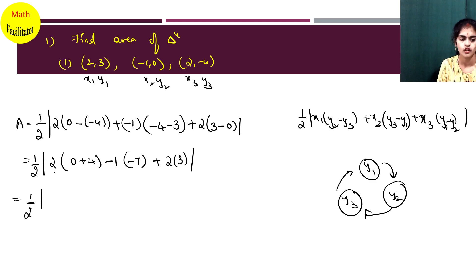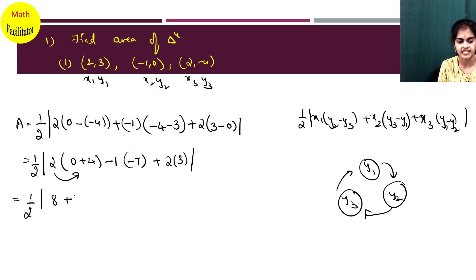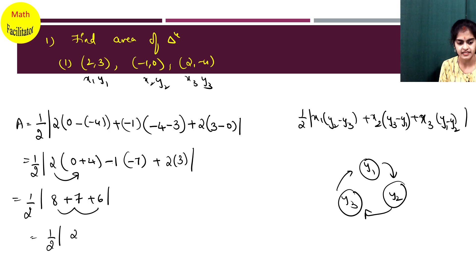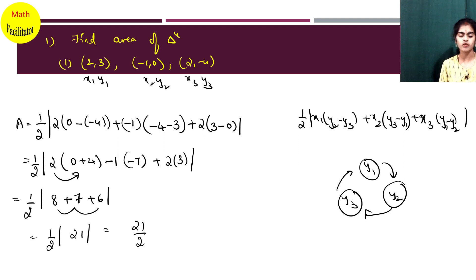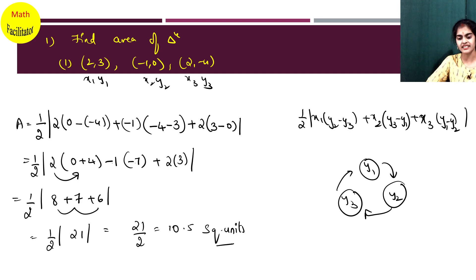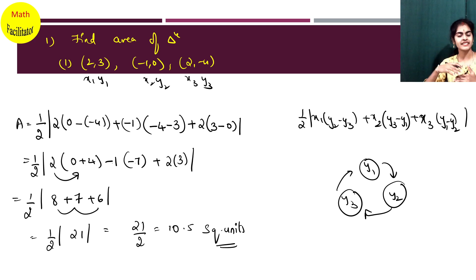So it is half into (8 + 7 + 6). 8 plus 7 is 15, plus 6 is 21. So this is nothing but 21 by 2. Inside the modulus we have a positive value only, so it is 21/2, which you can write as 10.5 or 10 and a half square units. Always, since it is area, we write square units. In distance we write units; here it is area so we write square units.